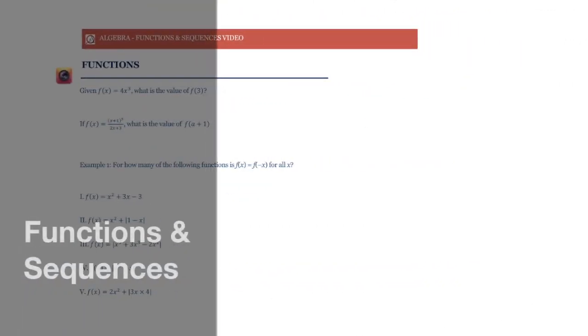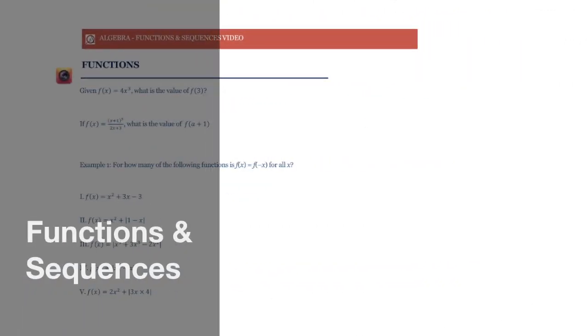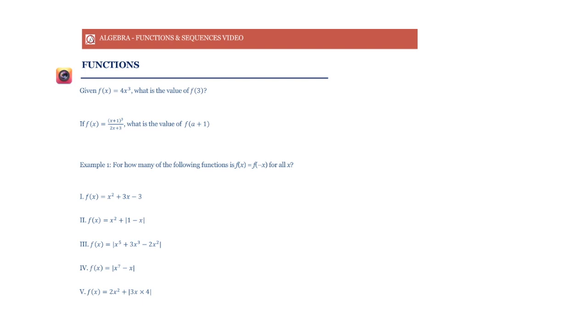Let's start with functions now. Notwithstanding the very mathematical notation that we use in it, its concept is fairly simple. A function in x written as f(x) is just an expression in x. So f(x), for example, is equal to x cubed minus 7. This is an expression in x. Instead of writing x cubed minus 7 everywhere, we can just write f(x). Think of it as the name of this particular expression.